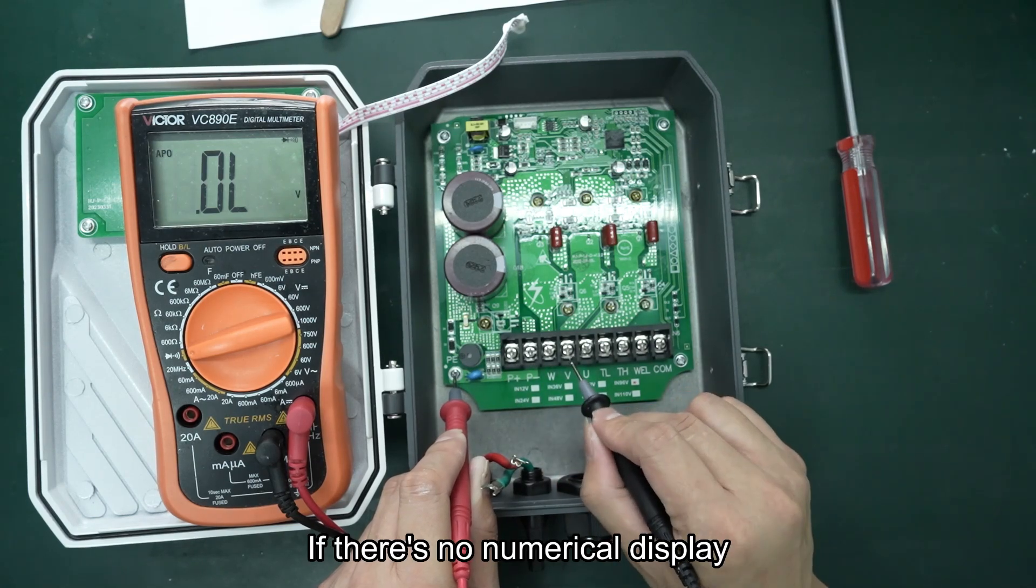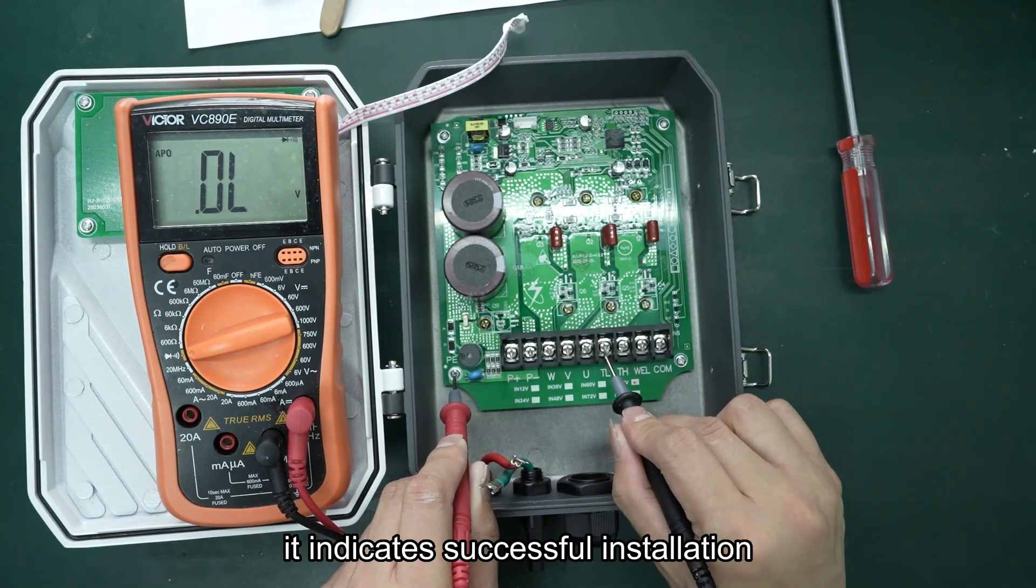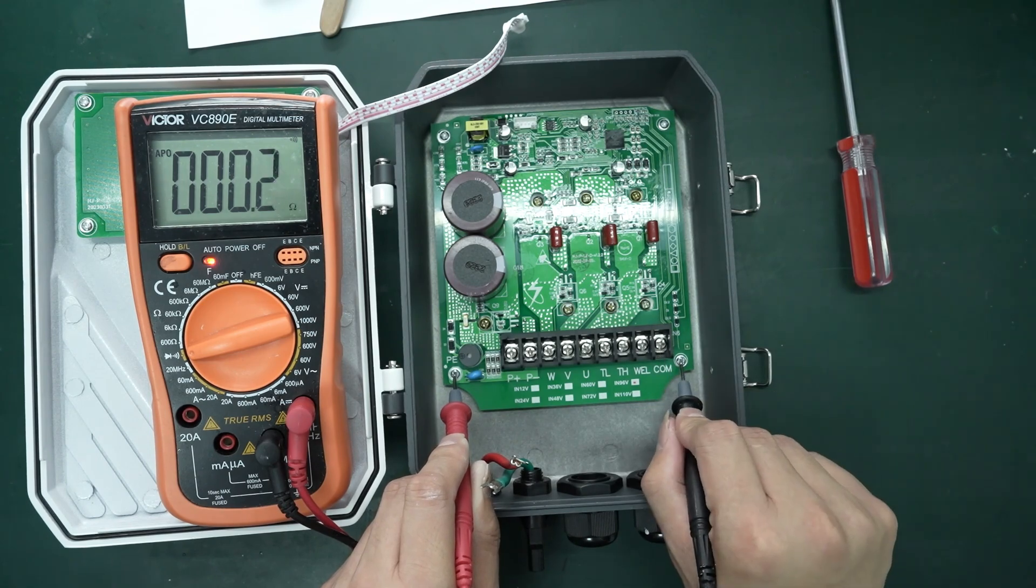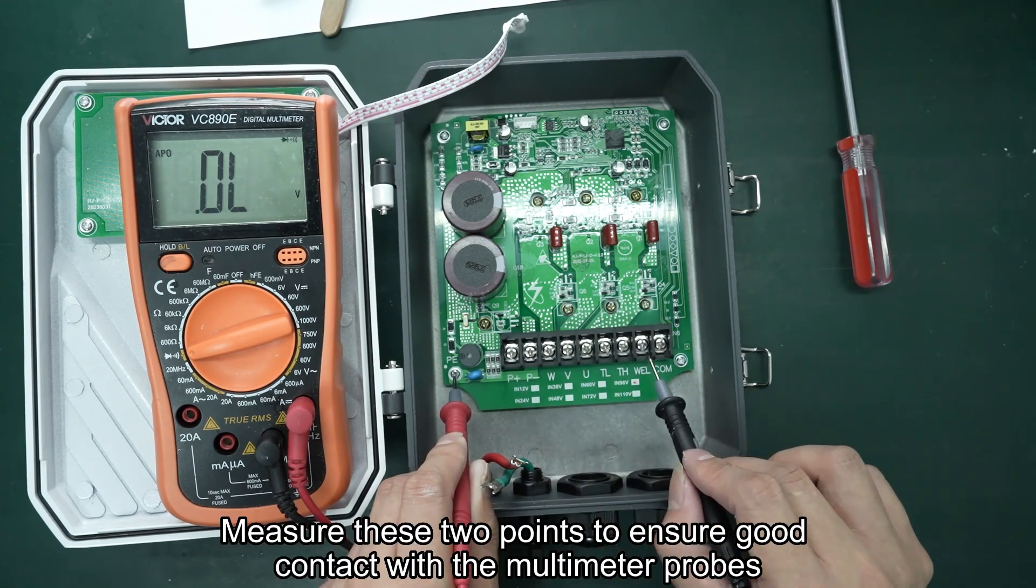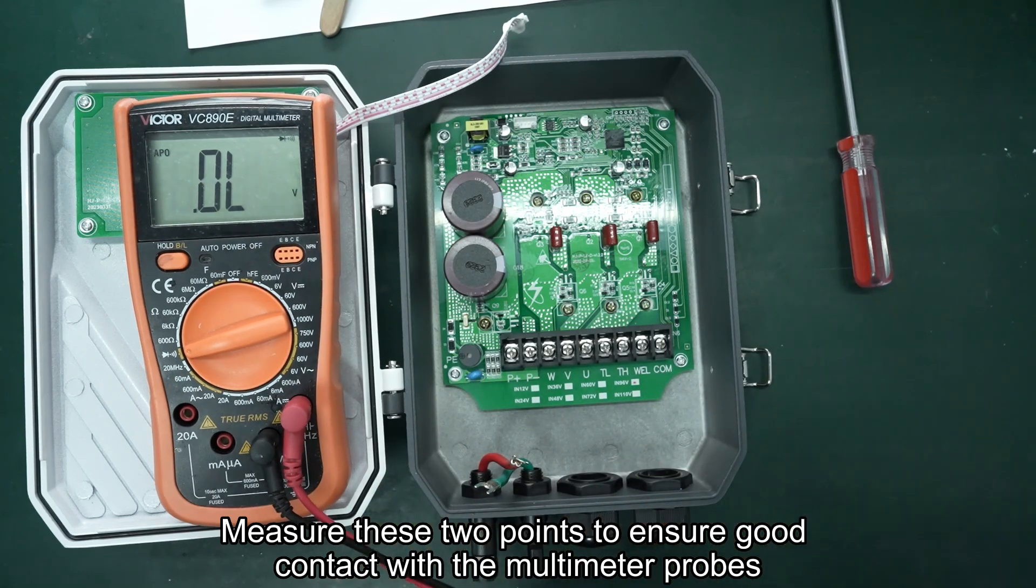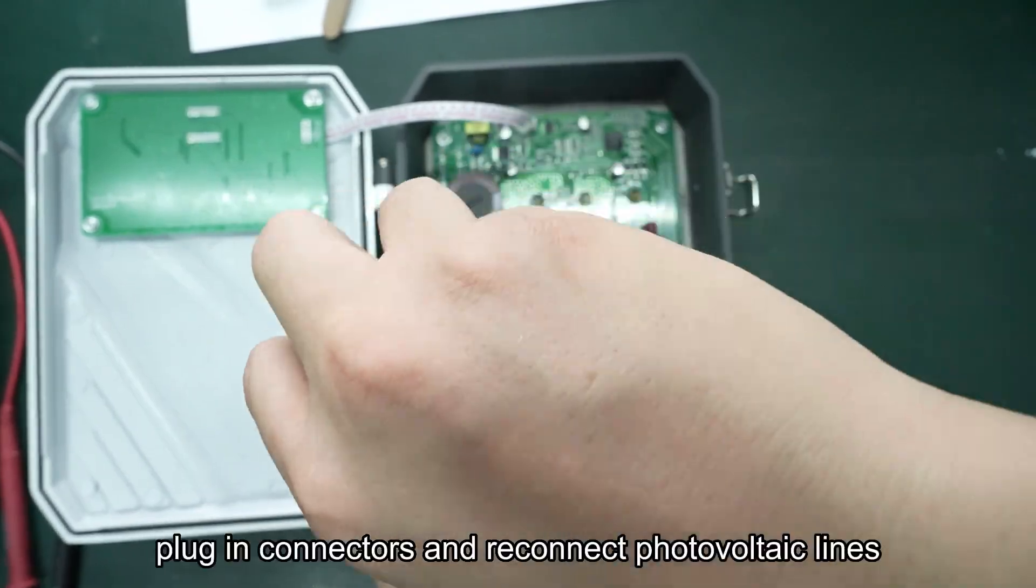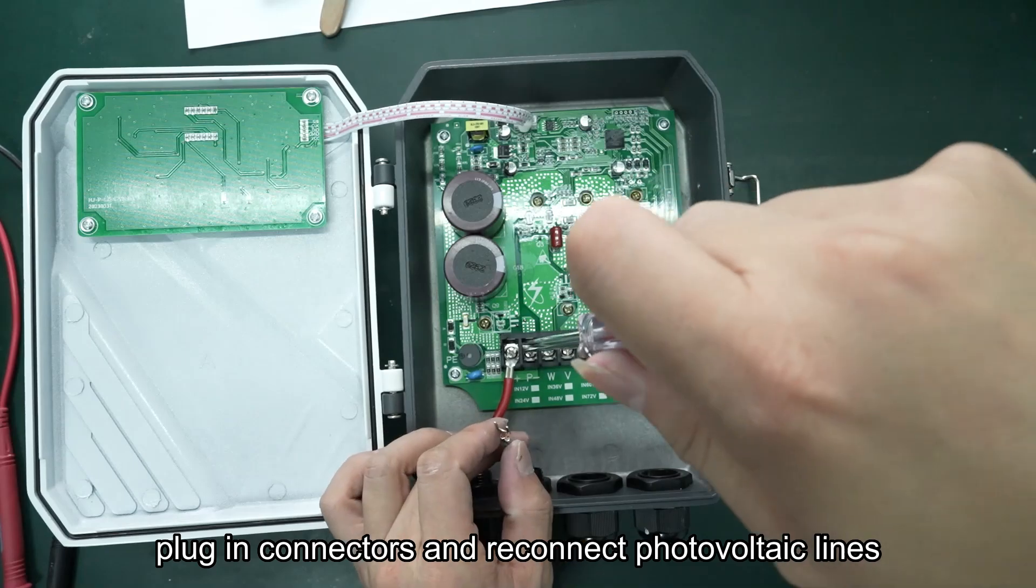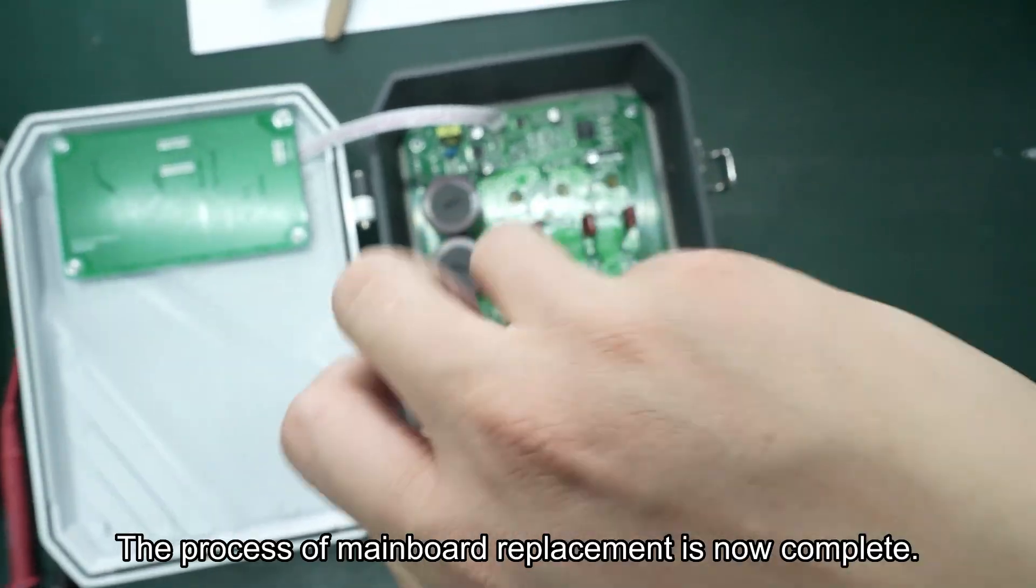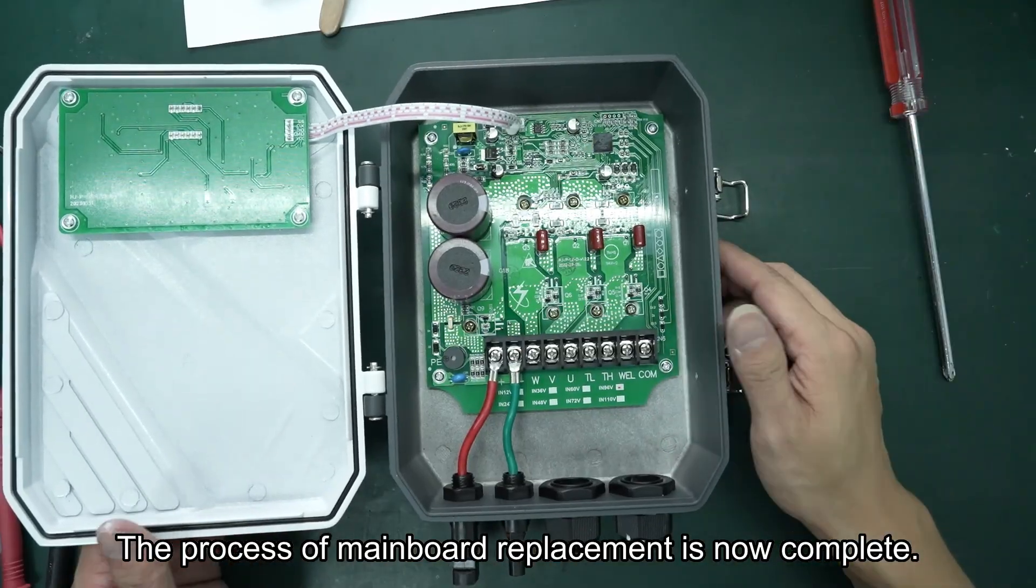If there's no numerical display, it indicates successful installation. Measure these two points to ensure good contact with the multimeter probes. After confirming the assembly is qualified, plug in the connectors and reconnect the photovoltaic lines. The main board replacement process is now complete.